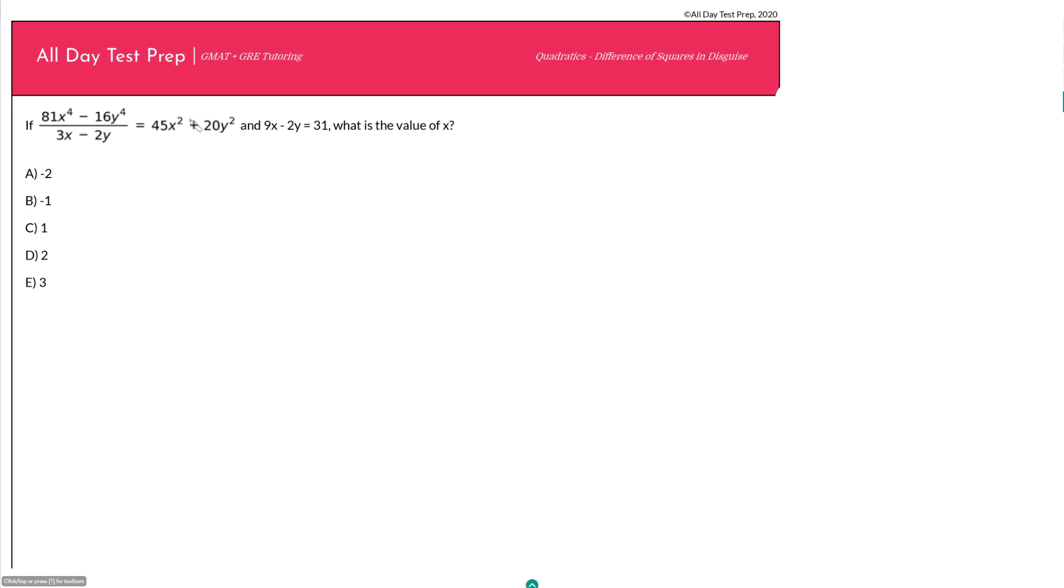So let's start by rewriting our equations. Let's start with the easy one first. Do not forget that you have this information, 9x minus 2y is equal to 31, because it looks like the majority of our time is going to be spent with this guy here. You don't want to forget that you have this guy here.